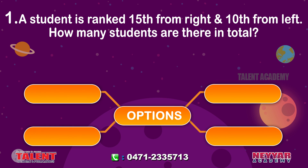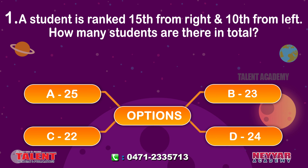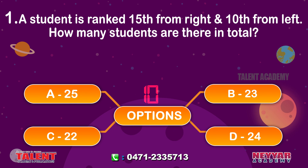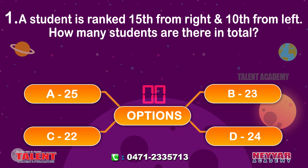A student is ranked 15th from the right and 10th from the left. How many students are there in total? Options: A 25, B 23, C 22, D 24. The correct answer is D 24.